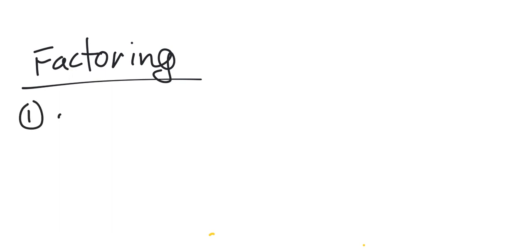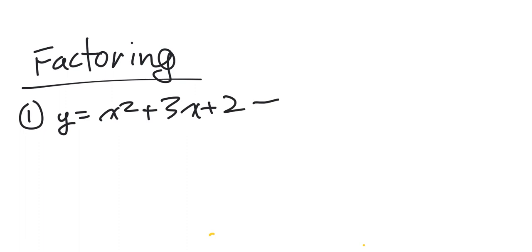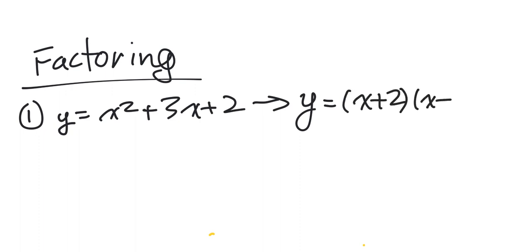So you remember when we had equations that looked like this — we called this the standard form. We could take our standard form and turn it into something else. For example, if I had x squared plus 3x plus 2, the intercept form of this thing, specifically, looks like x plus 2 and x plus 1 — as our solution, that would be our intercept form.